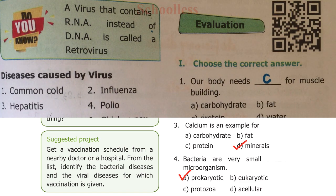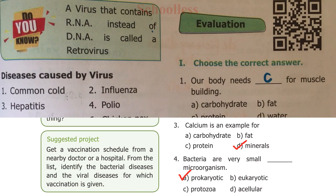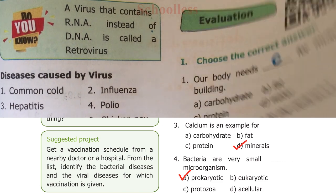Question Four: Bacteria are very small microorganisms — A) Prokaryotic, B) Eukaryotic, C) Protozoa, D) Acellular. Bacteria are Prokaryotic. A is the answer.